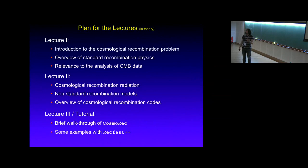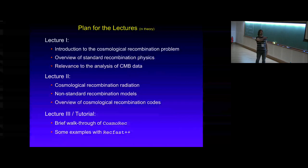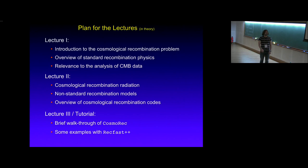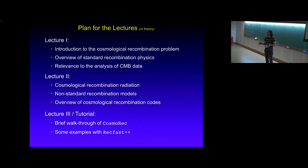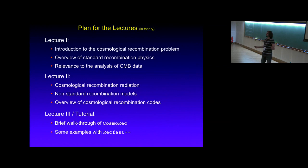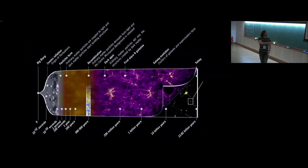Here's my plan for the lectures. I'm going to start with an introduction to recombination physics, in particular focusing on standard recombination physics and why it is so highly relevant. Tomorrow in my second lecture, I will talk about the cosmological recombination radiation, non-standard recombination models, and give a brief overview of recombination codes. In my third lecture, I will give a tutorial on the recombination codes, in particular focusing on RecFast++, which is a very simple code to use. If you have C++ compilers it should be easy to install.